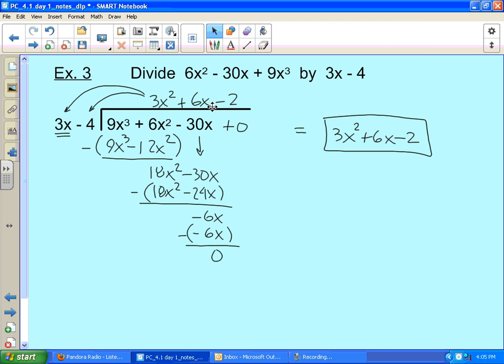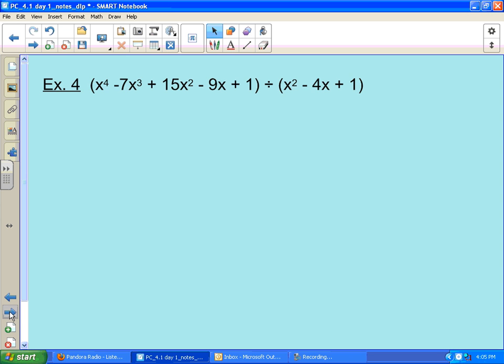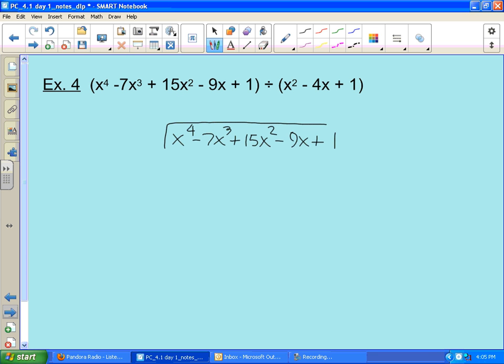What happens, though, when - both of those two examples we've used, the binomial that we're dividing with - what happens when our divisor is a trinomial or something other than a first degree? So here we have this fourth degree function x⁴ - 7x³ + 15x² - 9x + 1, being divided now by a quadratic. Well, it sets up the same way. Everything is in descending order already.